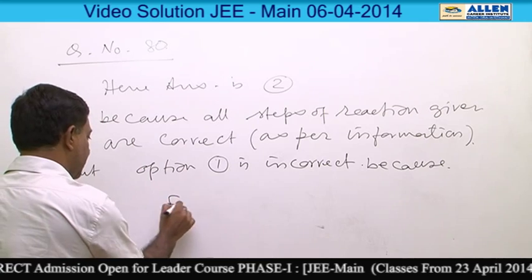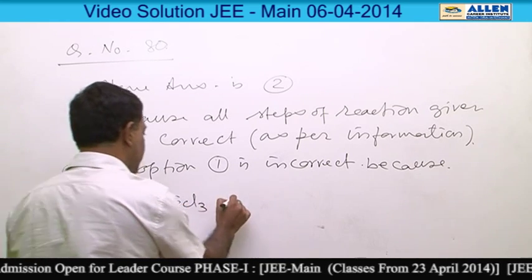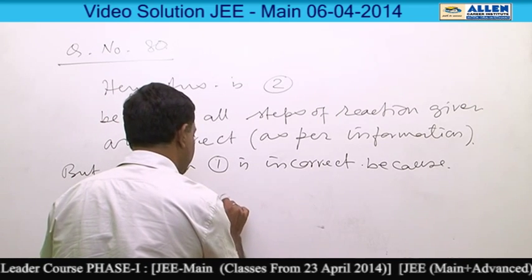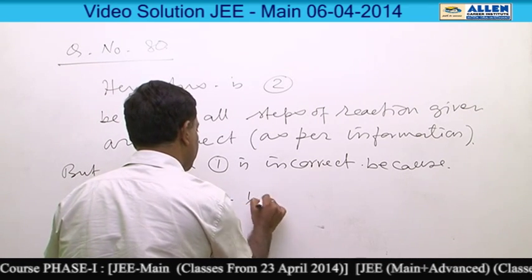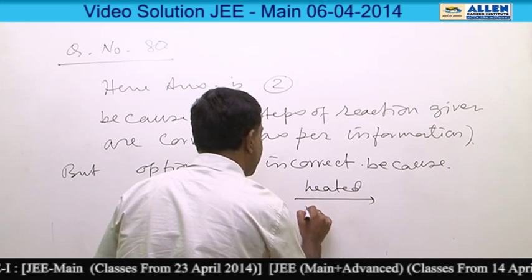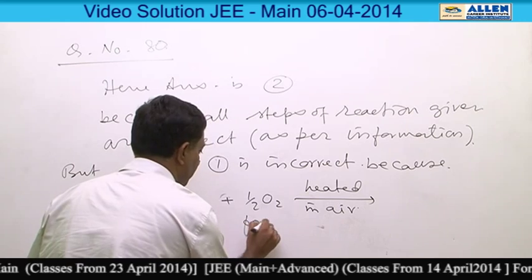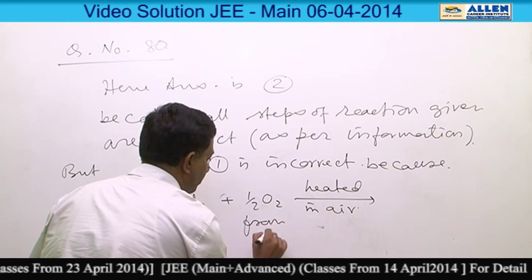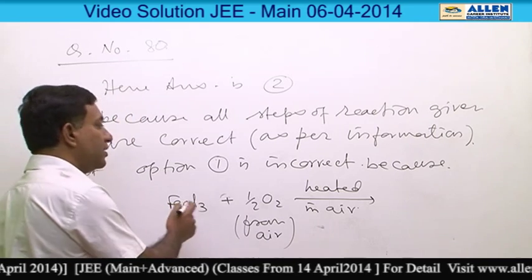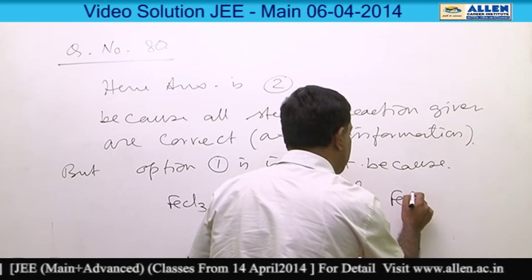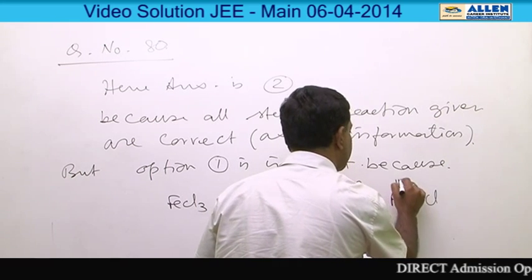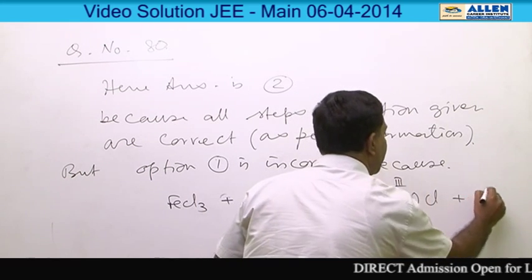Option 1 is incorrect because when FeCl3 is heated in air, oxygen from the air attaches and forms iron(3) oxychloride, releasing chlorine gas.